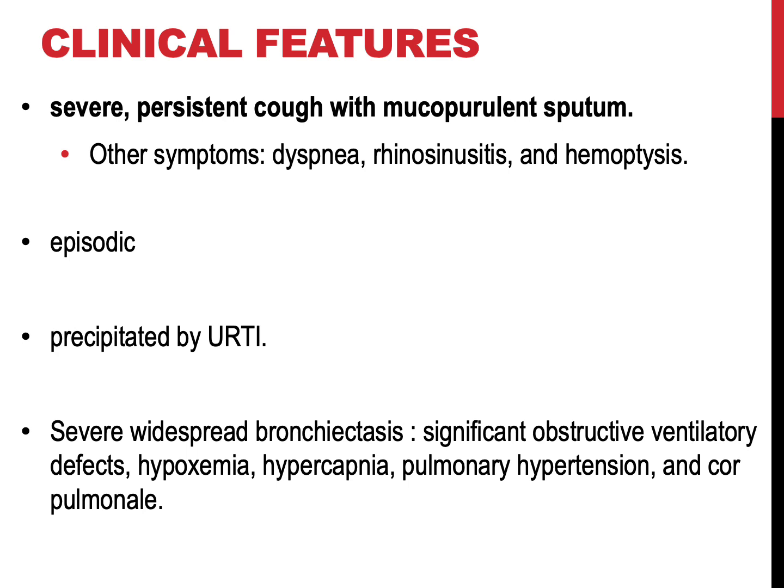Clinically, bronchiectasis is characterized by severe persistent cough associated with expectoration of mucopurulent sputum. Other common symptoms include shortness of breath or dyspnea, rhinosinusitis, and hemoptysis. Symptoms are often episodic and induced by upper respiratory tract infections. Severe widespread bronchiectasis may lead to significant obstructive ventilatory defects, associated with hypoxemia, hypercapnia, pulmonary hypertension, and cor pulmonale. However, with current treatment, outcomes have improved, and severe complications such as brain abscesses or cor pulmonale are less frequent.